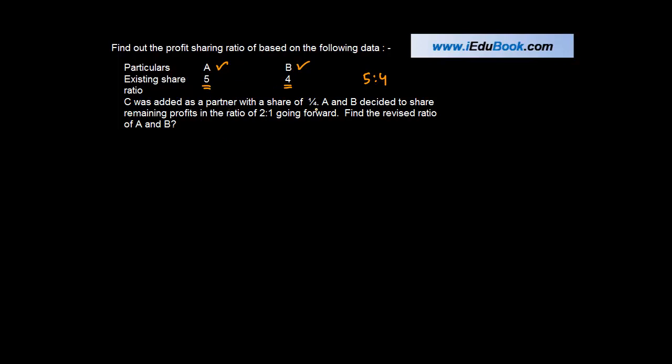C was added as a partner with a share of 1/4. A and B decided to share remaining profits in the ratio of 2 is to 1 going forward. Find the revised ratio of A and B.